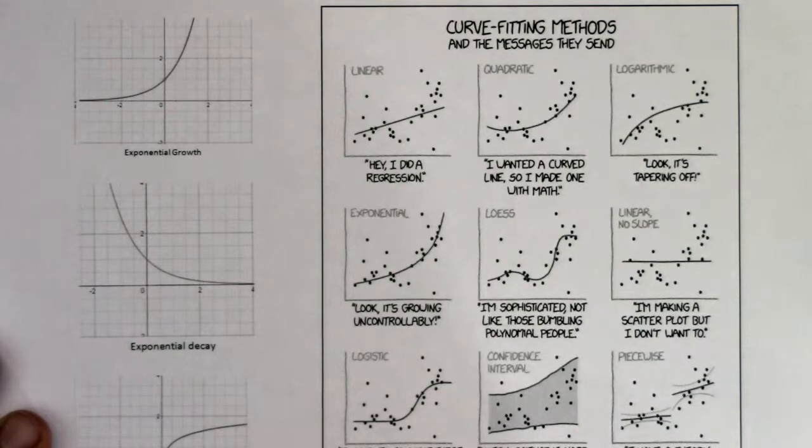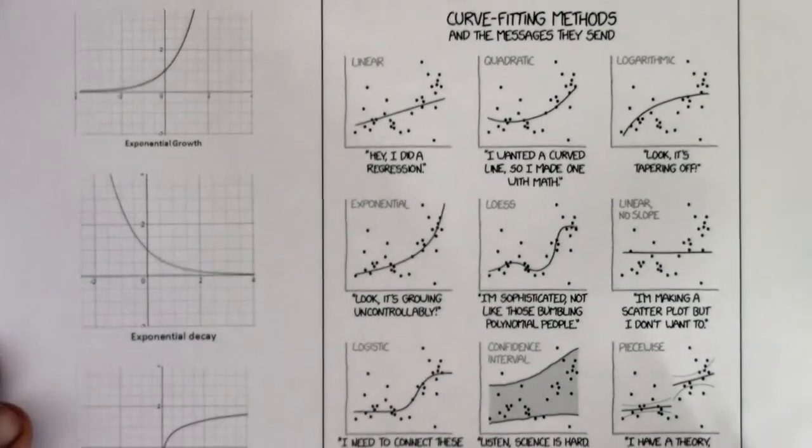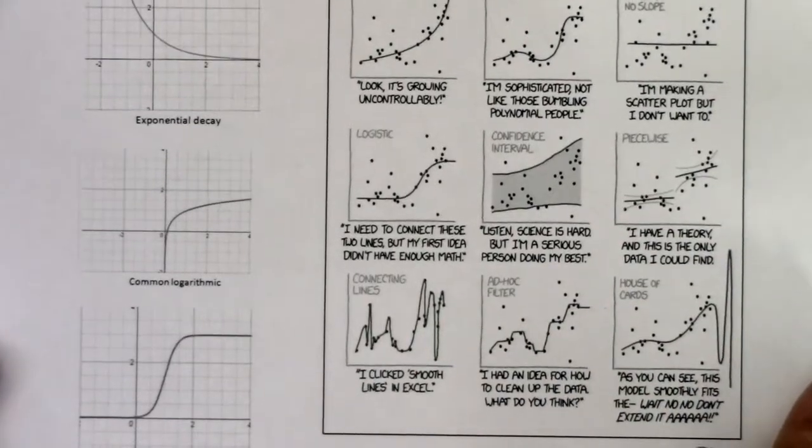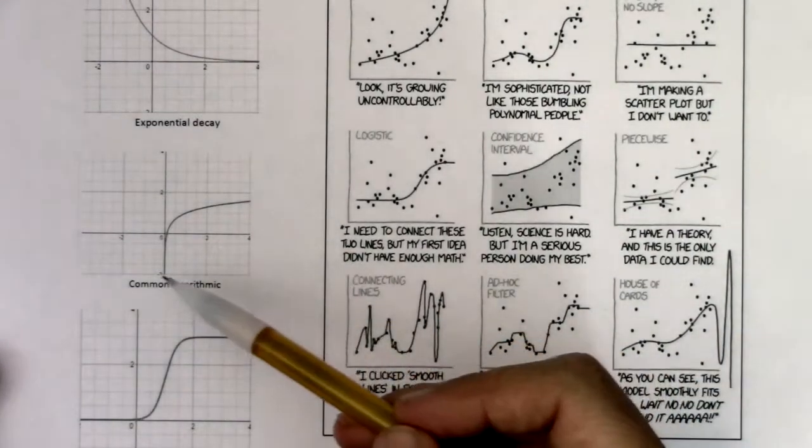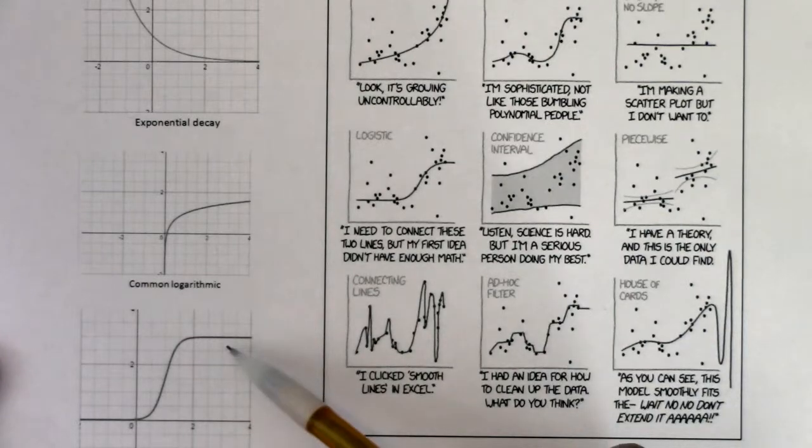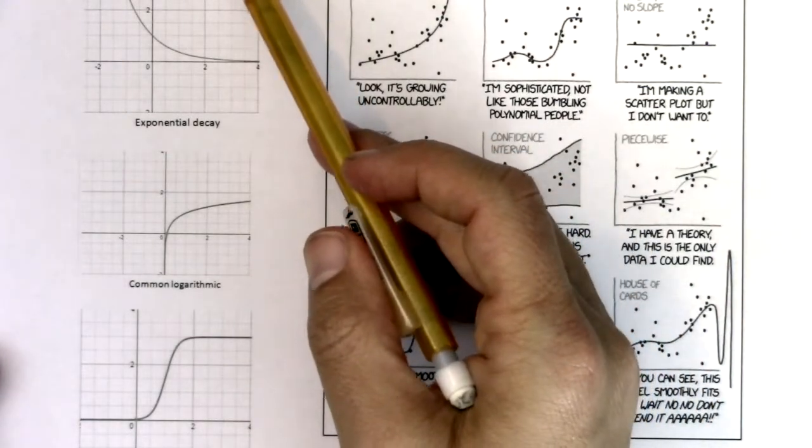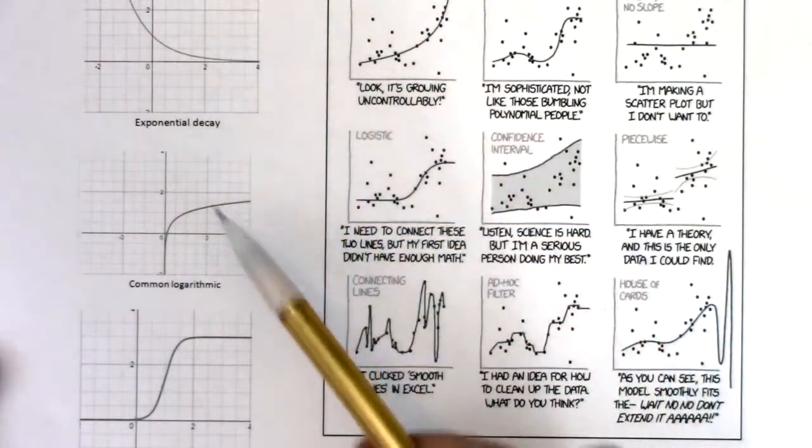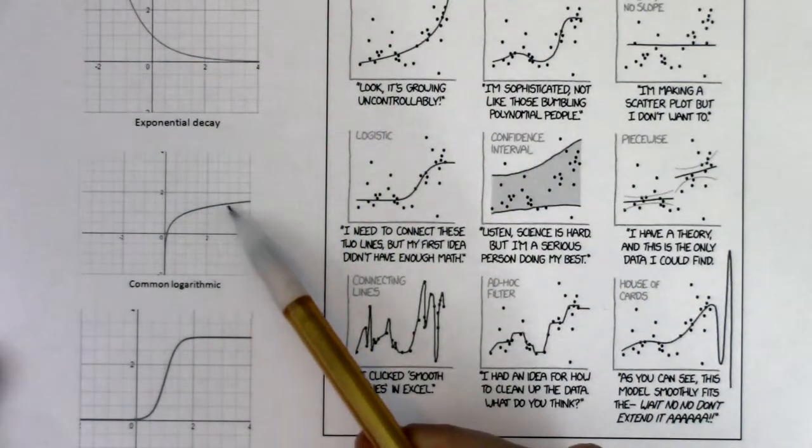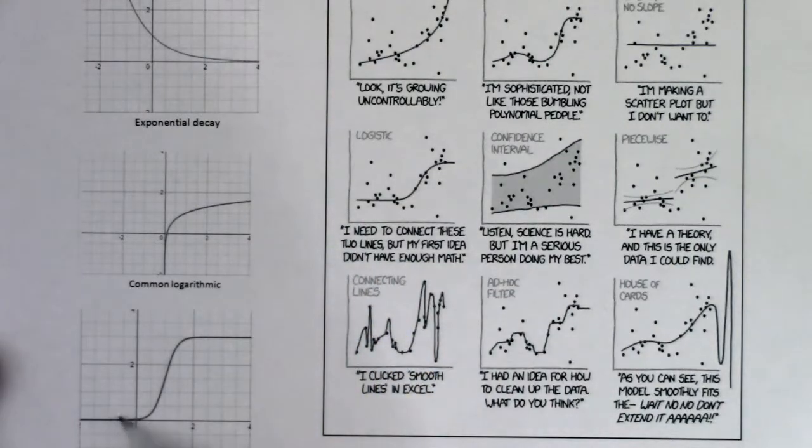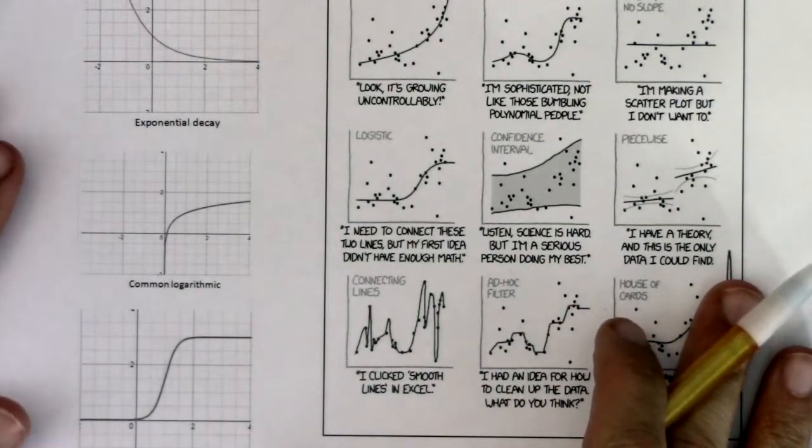Over here we have common logarithmic growth and logistic growth. So we had really fast growth, really slow growth, super slow growth that's capping but does keep going up forever. And then we have logistic where it really does cap. There's actually a horizontal asymptote blocking it from going any higher than its carrying capacity.